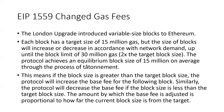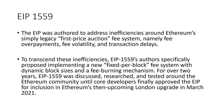Similarly, the protocol will decrease the base fee if the block size is less than the target block size. The amount by which the base fee is adjusted is proportional to how far the current block size is from the target. EIP-1559 was authored to address various inefficiencies around the legacy first-price auction fee system — namely, because of the role of miners and other issues, there were fee overpayments, fee volatility, and transaction delays. To deal with these inefficiencies, EIP-1559 authors proposed implementing a fixed per-block fee system with dynamic block sizes, and they also included a fee burning mechanism, which we'll talk about in a little bit.